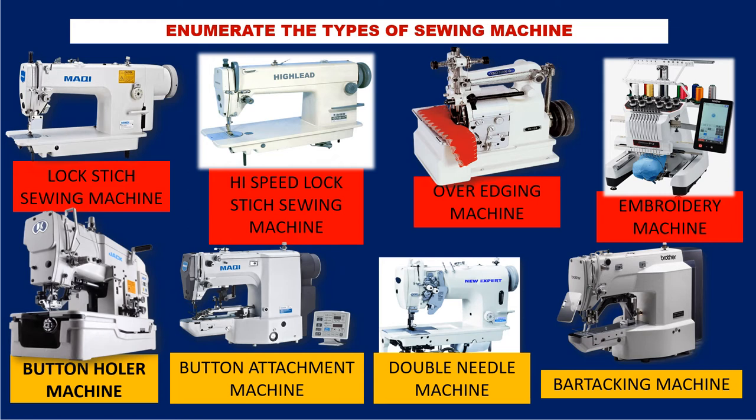So we have eight types of sewing machines: lock stitch sewing machine, high-speed lock stitch sewing machine, over-edging machine, embroidery machine, button-holer machine, button attachment machine, double-needle machine, and bar-tacking machine.